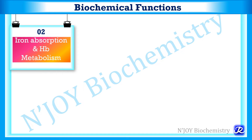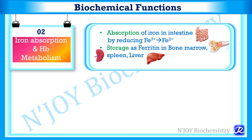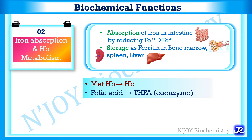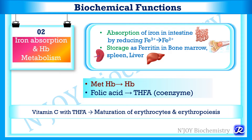Vitamin C also has a role in iron absorption and hemoglobin metabolism. It helps in the absorption of iron in the intestine by reducing ferric ions to ferrous ions. Vitamin C's reducing property converts dietary iron to the ferrous form, enhancing its absorption from the intestine. It also plays a role in storage of iron as ferritin in the bone marrow, spleen, and liver. It converts methemoglobin into hemoglobin and increases the oxygen-combining capacity of hemoglobin. It is also required for conversion of folic acid to its coenzyme form tetrahydrofolic acid, and thus is involved in the maturation of erythrocytes and erythropoiesis.